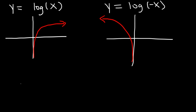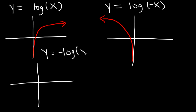The next shape you need to be familiar with is this one. If we have negative log of positive x — if the negative is in front, instead of reflecting over the y-axis, it's going to reflect over the x-axis. So it's going to travel towards quadrant 3. In quadrant 3, x is positive but y is negative.